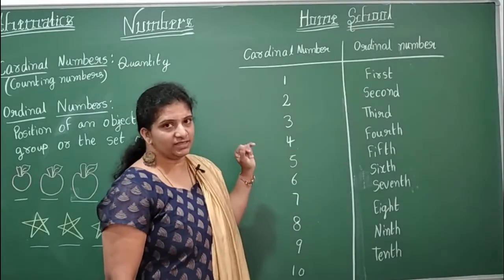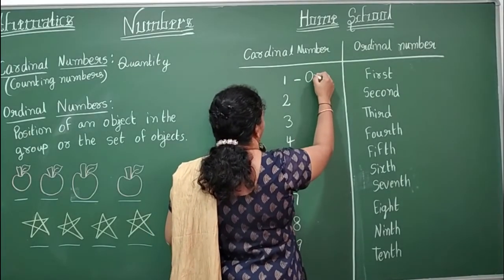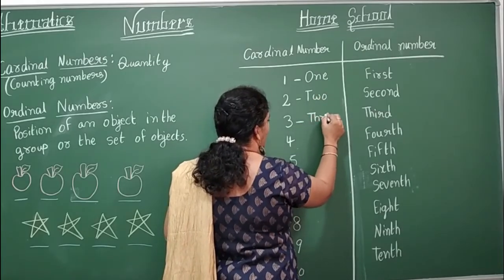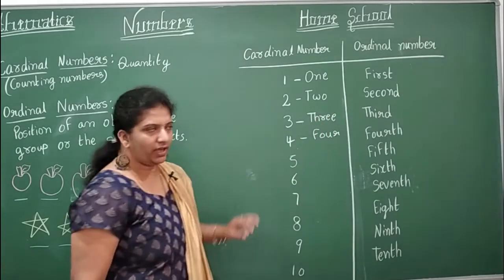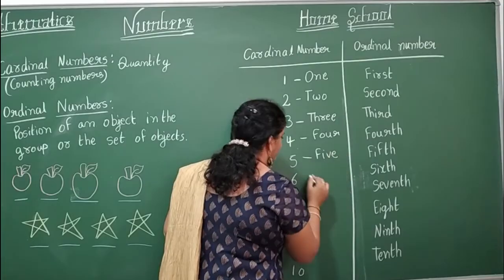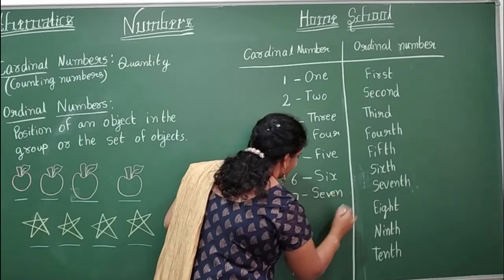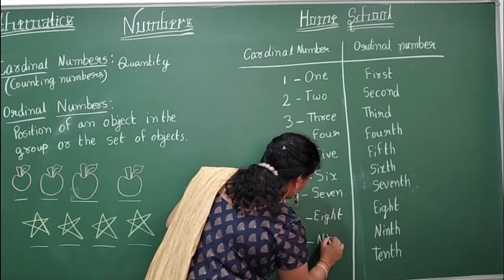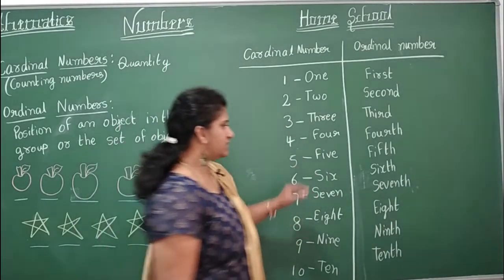Now let's look at how we write cardinal numbers in words. 1 is written as O-N-E, one. 2 is T-W-O, two. 3 is T-H-R-E-E, three. 4 is F-O-U-R, four. 5 is F-I-V-E, five. 6 is S-I-X, six. 7 is S-E-V-E-N, seven. 8 is E-I-G-H-T, eight. 9 is N-I-N-E, nine. 10 is T-E-N, ten.